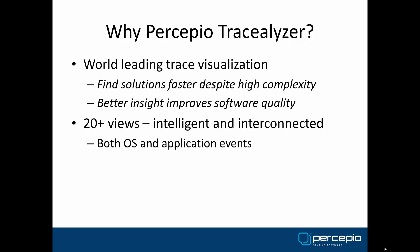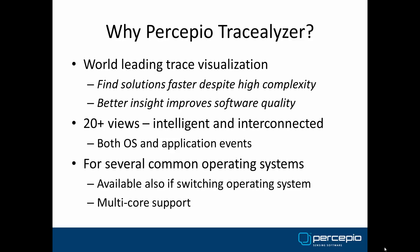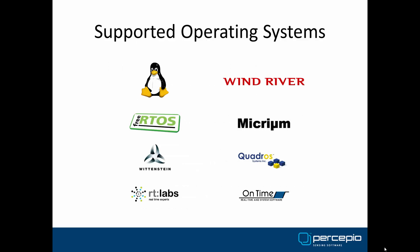Tracealyzer allows you to visualize both operating system events and application events in the same tool. Tracealyzer is available for several leading operating systems, so if you later decide to switch operating system, you can still keep Tracealyzer. Percepio collaborates with many leading operating system developers, and provides Tracealyzer for Linux, VxWorks, FreeRTOS, Micrium MicroC/OS-3, SafeRTOS, RTXC Quadros, RT Kernel from RT Labs, and OnTime RTOS-32.